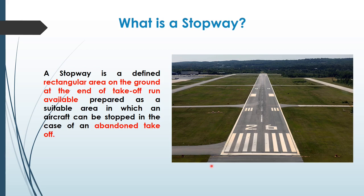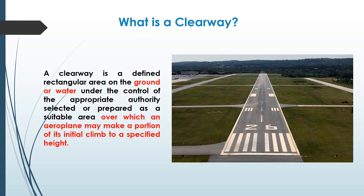Basically, at the end of takeoff run available for a runway, if there is a rectangular area provided which will cater to an abandoned takeoff, then that rectangular area on the ground is called the stopway. Next is the clearway. A clearway is a defined rectangular area on ground or water, so a clearway can be located on ground as well as on water. This clearway should be under the control of the appropriate authority and is selected and prepared as a suitable area over which the aircraft can make a portion of its initial climb up to a specific height.